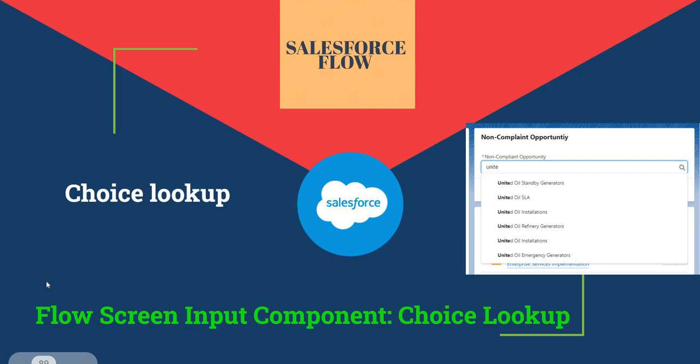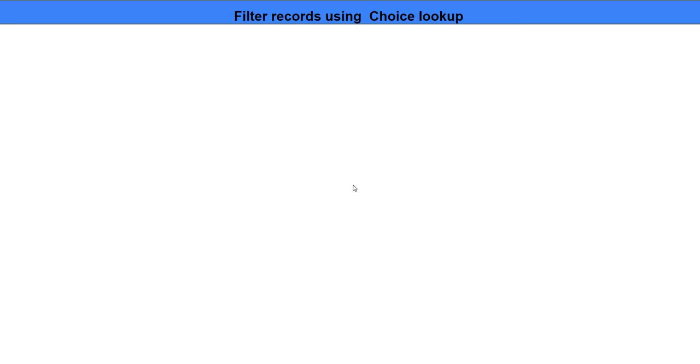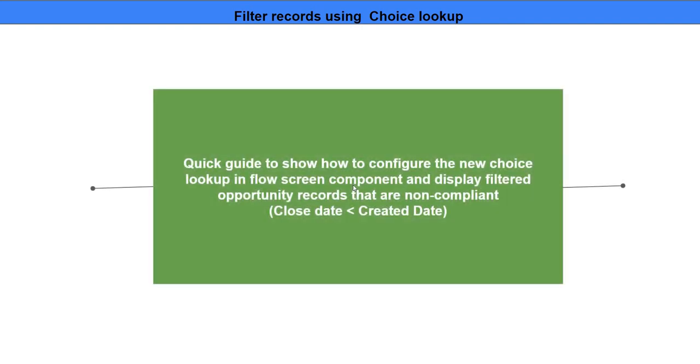In this video we are going to talk about the Choice Lookup flow component. This component, when used in a screen flow, enables users to search for and select one option from a set of choices. Users can either scroll through the options or simply search, which is the great advantage of using a choice lookup.